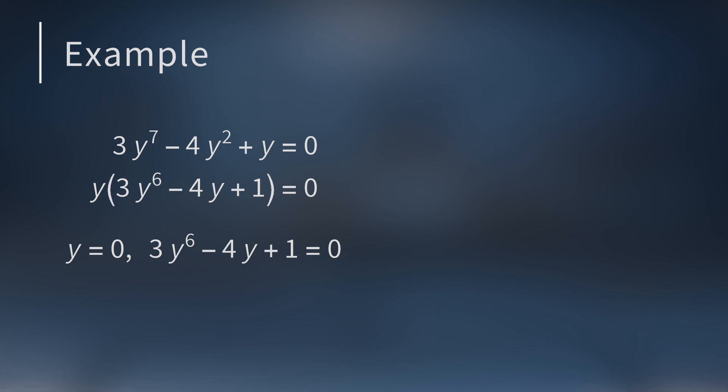For another example, look at the Diophantine equation 3y⁷ - 4y² + y = 0. All the terms are on one side and the polynomial is in standard form, so the first step is done. We can factor out y which gives us y times the quantity 3y⁶ - 4y + 1 = 0. Setting the first factor to 0 gives us one integer solution, y = 0. But what about the second factor?